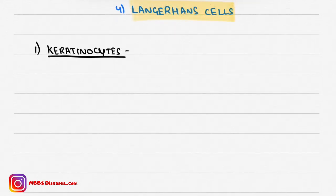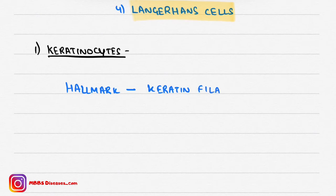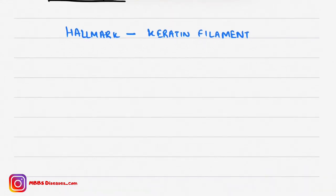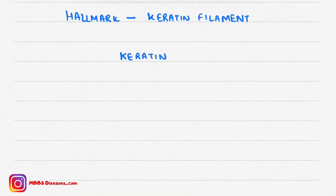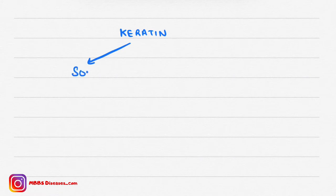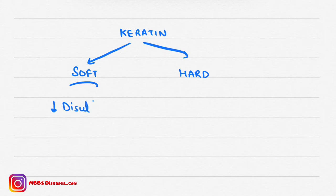The hallmark feature of keratinocytes is the presence of keratin filaments, also known as tonofilaments or intermediate filaments. There are two types of keratin: soft keratin, which has low disulfide bonds, and hard keratin, which has more disulfide bonds.